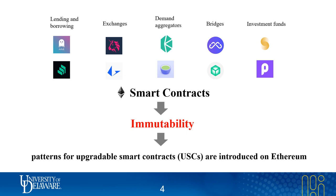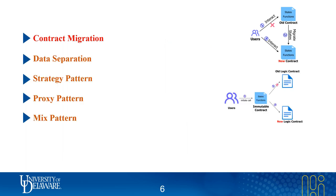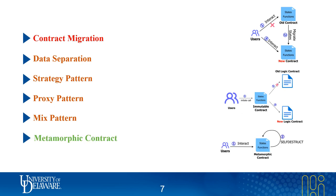In this work, we first characterize six commonly used upgradable patterns. The patterns cover the straightforward method of deploying a new contract, four patterns that decouple a contract into two subcontracts, and the metamorphic contract that changes the code at an address.